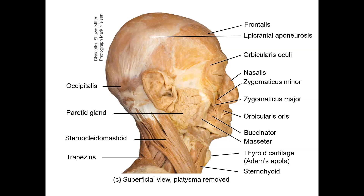The sternocleidomastoid muscle runs diagonally across the neck — when you turn your head left to right, the muscle that sticks out is the sternocleidomastoid. To remember muscle movements: the name gives away the attachments, and if you know the origin and insertion, mentally contract the muscle — the distal end will move toward the proximal end. This logic lets you derive movements without rote memorization.